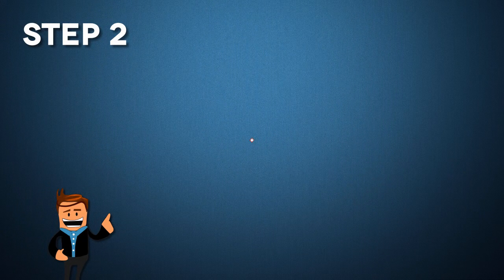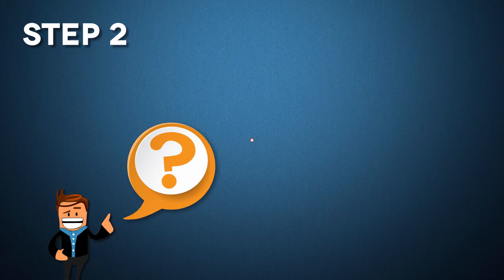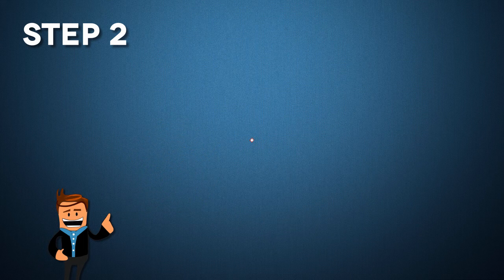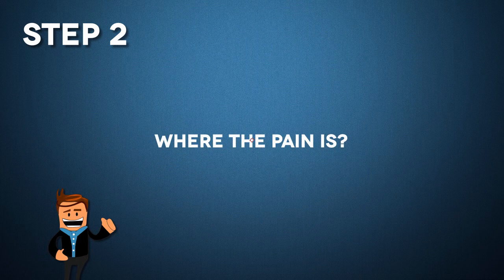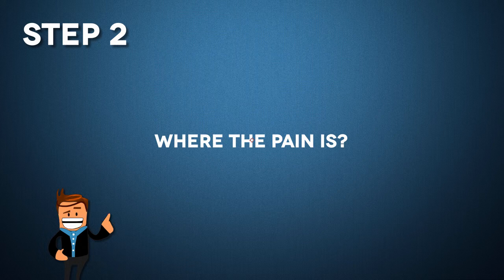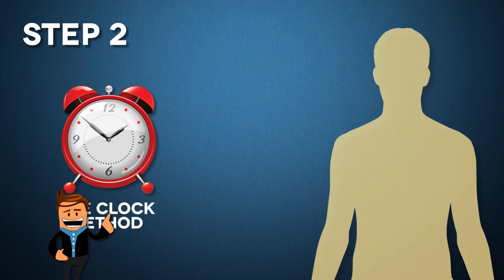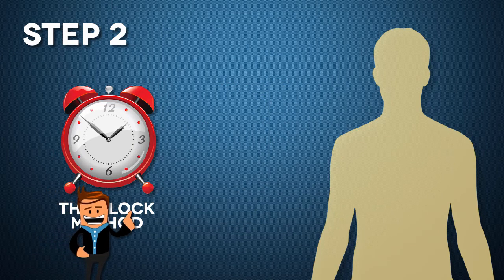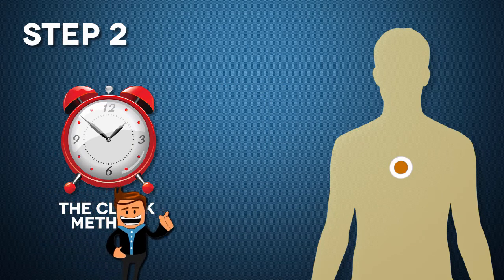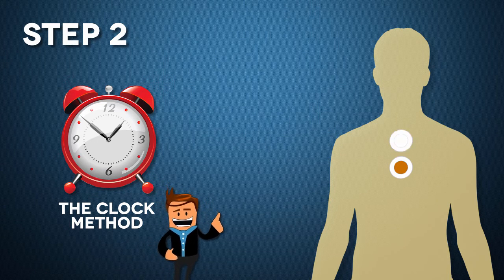First, we wanted to know where the pain was. It's very important that you have the person point to where the pain is, so you get the point exactly correct. This is going to be the clock method that we're going to use. And you apply the tan patch directly on top of the pain, and you start with the white patch above it.